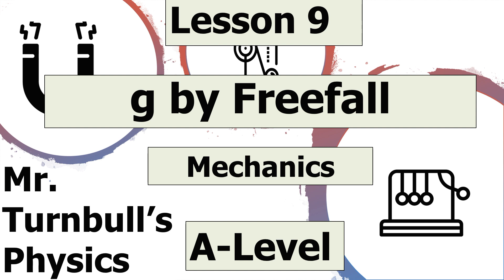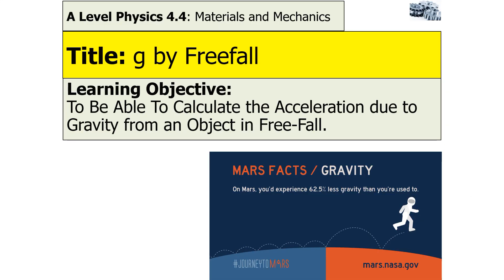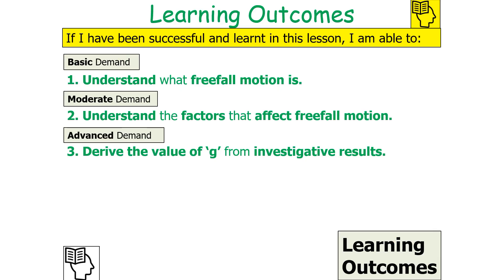In today's lesson, we're going to look at how to calculate the acceleration due to gravity for an object which is in freefall. If we've been successful in today's lesson, we should be able to understand what freefall motion is, understand the factors that affect freefall motion, and finally derive the value of g from investigative results.